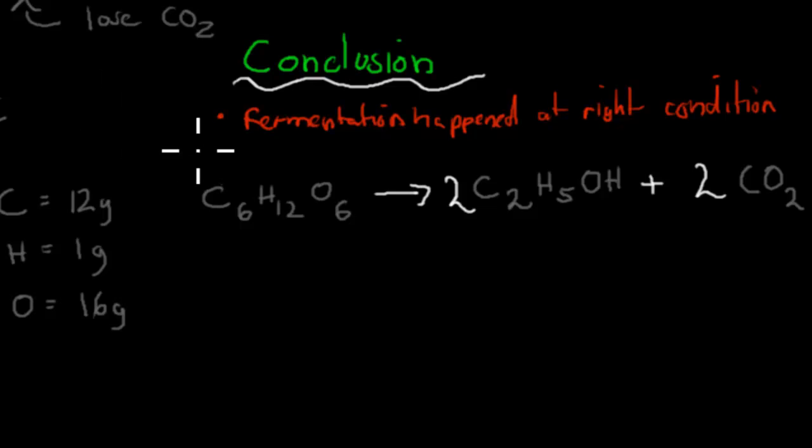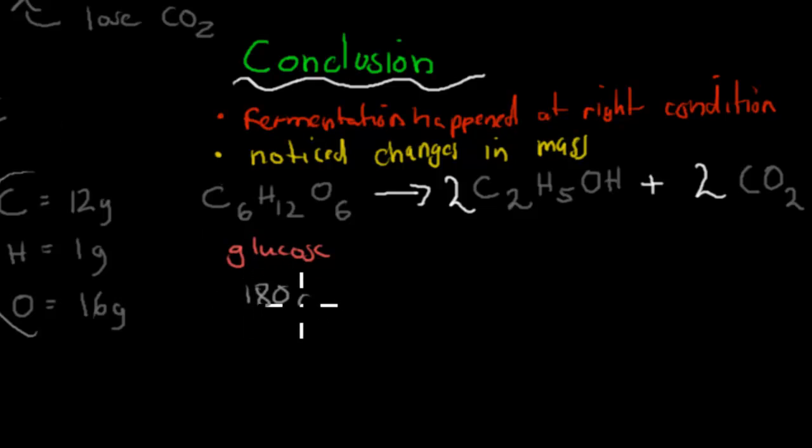We also noticed changes in mass. The reason why there were changes is because this glucose molecule weighs, if we count, carbons weighing 12 grams or 12 atomic mass units per carbon, hydrogen 1 and oxygen 16. If we count all these up, 6 carbons times 12, 12 hydrogens times 1, and 6 oxygens times 16, that glucose weighs roughly 180 AMU, or one mole would be 180 grams.